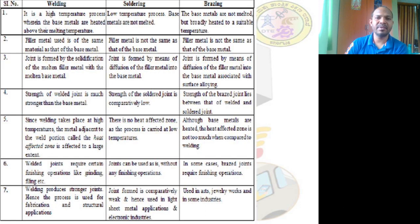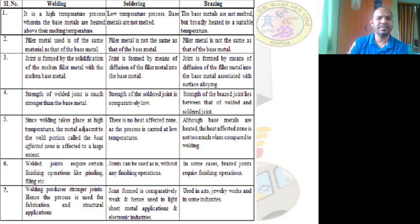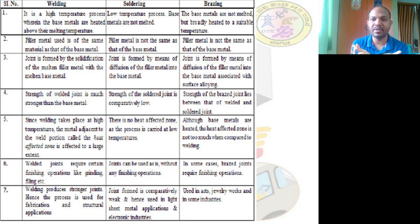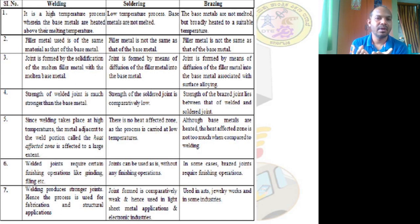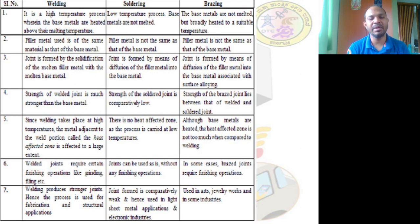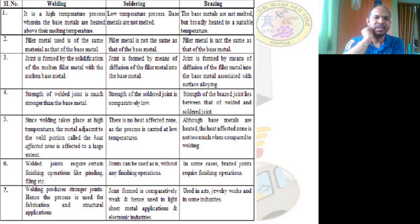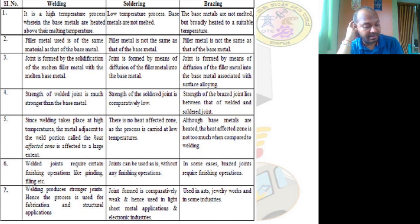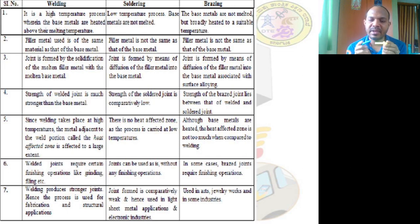In welding, the filler metal used is of the same material as the base metal. If steel joints have to be joined, the filler material will also be steel, which is why it doesn't look like a different material — it appears as a single piece. In soldering, the filler material is not the same as the base metal.